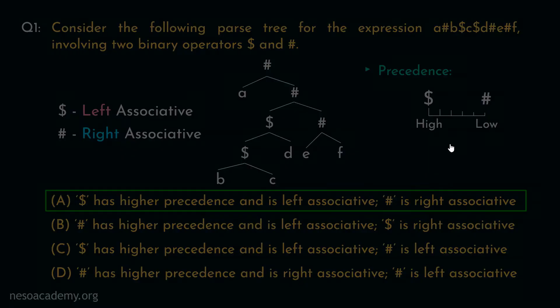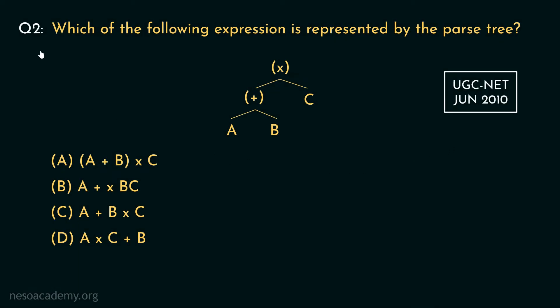Let's now proceed to the next question. Consider this question. Which of the following expression is represented by the parse tree? So this is the parse tree and these are the options. Starting from the bottom level this would give us a plus b and from this level we would get a plus b into c.